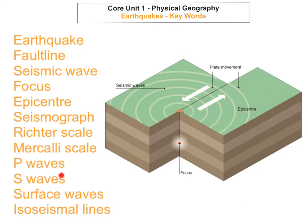The last type of wave is surface waves, sometimes known as L waves or long waves. These affect the surface or just below it. They are the slowest of all three types of waves — slower than P waves and S waves — but surface waves are the ones that cause the most destruction.